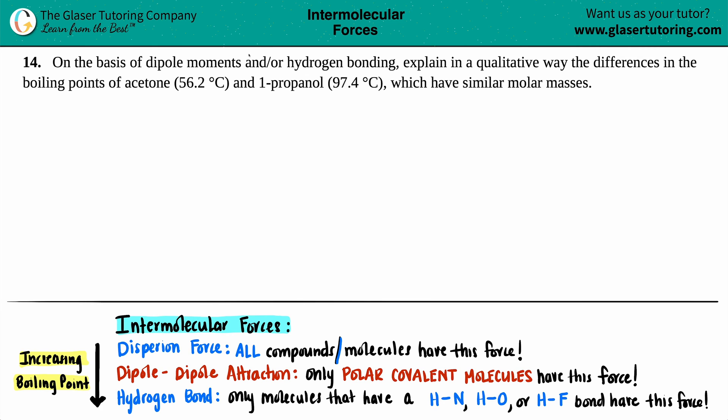Number 14. On the basis of dipole moments and or hydrogen bonding, explain in a qualitative way the differences in the boiling points of acetone, which has a boiling point of 56.2 degrees Celsius, and 1-propanol, which is 97.4 degrees Celsius as the boiling point, which have similar molar masses.